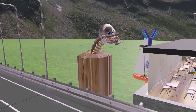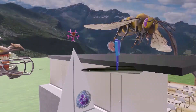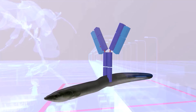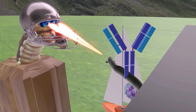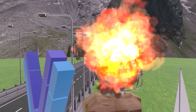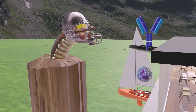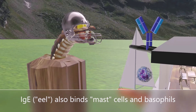Next we get to the helmet worm — 'helmet worm' helps us remember helminth worms. IgE, represented by the eel (eel for E), is responsible for protecting against helminth worms. The eel activates the eyes of the pathogen, and 'eyes' reminds us of eosinophils, as IgE contributes to immunity against parasites by activating eosinophils — which is why the worm explodes. The eel also likes to hang around a boat with a mast, reminding us that IgE binds mast cells. And the picture of the basophil reminds us that IgE also binds basophils.